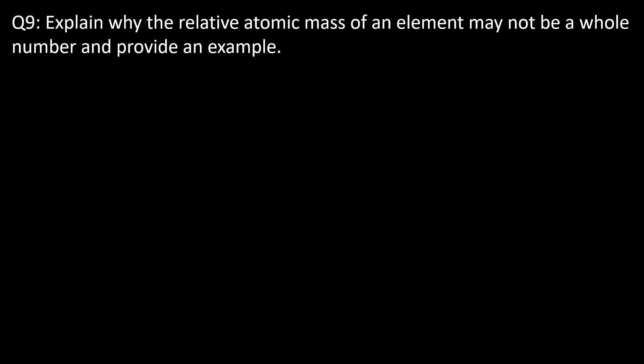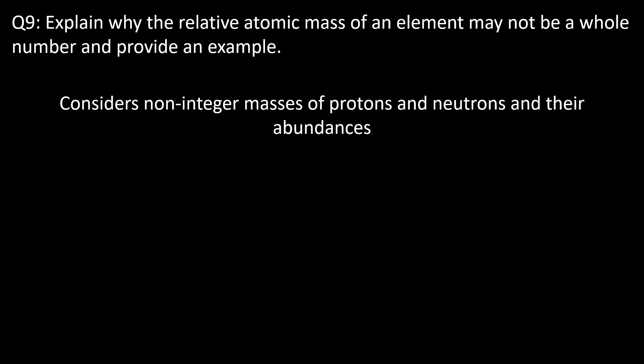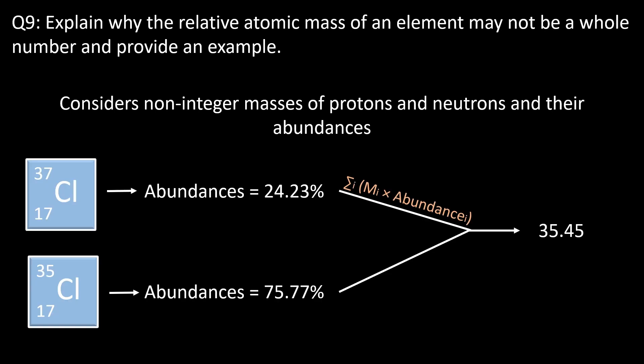Question nine: explain why the relative atomic mass of an element may not be a whole number and provide an example. The relative atomic mass may not be a whole number because it considers the masses and abundances of different isotopes. The isotopes have varying numbers of neutrons and the abundances are usually expressed as a fraction. For example, chlorine has two main isotopes: chlorine-35 with an abundance of about 75.77% and chlorine-37 with an abundance of about 24.23%. The weighted average of these masses leads to a relative atomic mass of approximately 35.45, which is not a whole number.